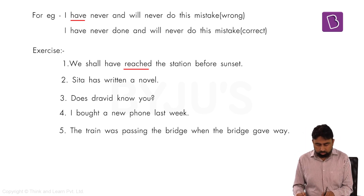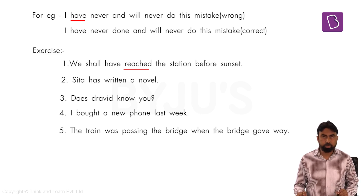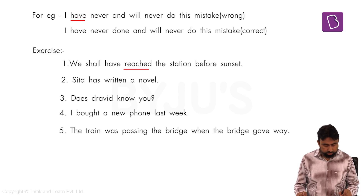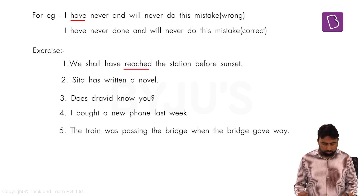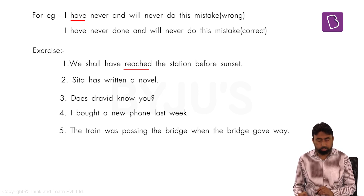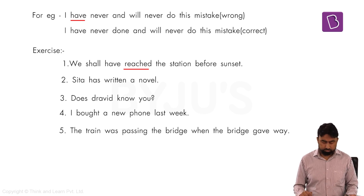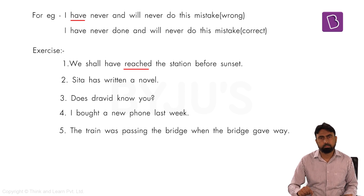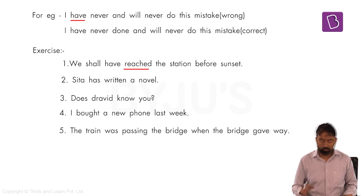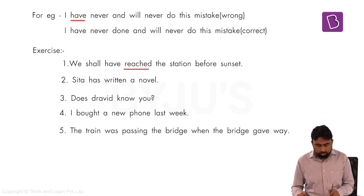Looking at option A — 'The train passed the bridge when the bridge gave way' — both are simple past, but we can't tell if it happened at the same time or before. Option B uses past continuous tense: 'was passing' means the action was ongoing at that moment. We've discussed that for an action happening at a particular moment in the past, we use continuous tense. So 'was passing' is the correct option: 'The train was passing the bridge when the bridge gave way.'